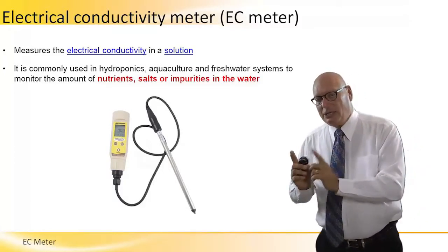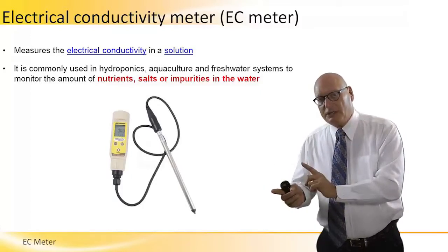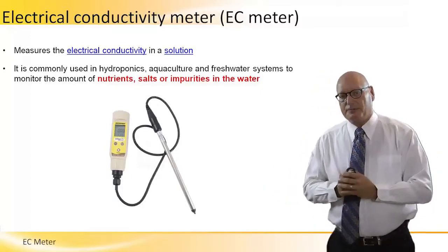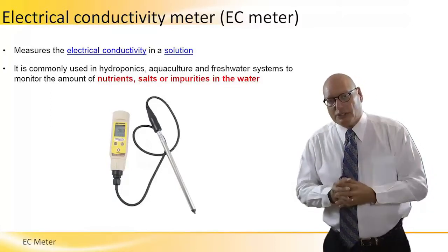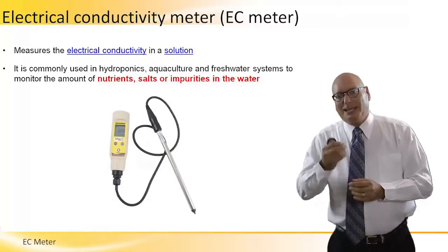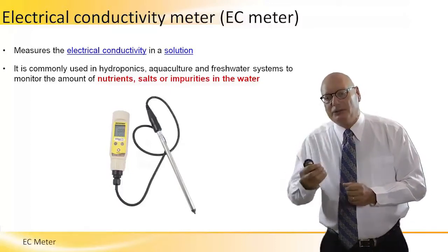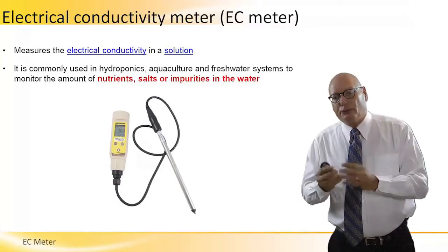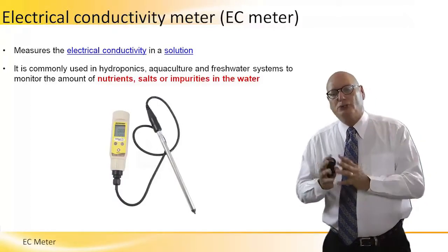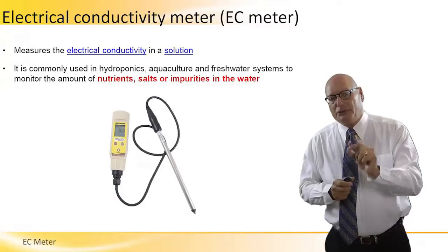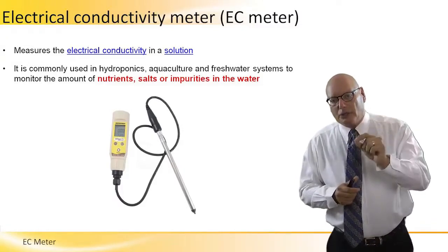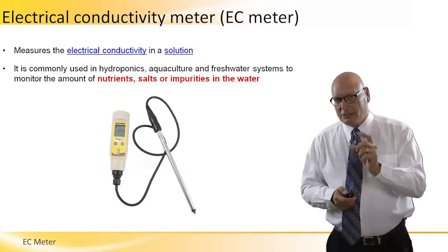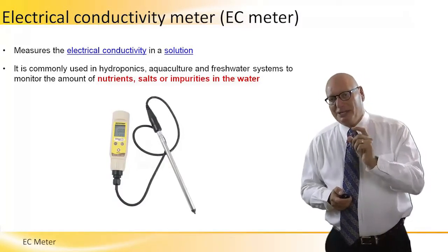We don't measure pH, not acid. We are actually now testing conductivity of water. By definition, it measures the electrical conductivity in the solution. It is commonly used in hydroponic, aquaculture, and freshwater systems to monitor the amount of nutrients, salts, and impurities in the water. That's the purpose of the EC meter.